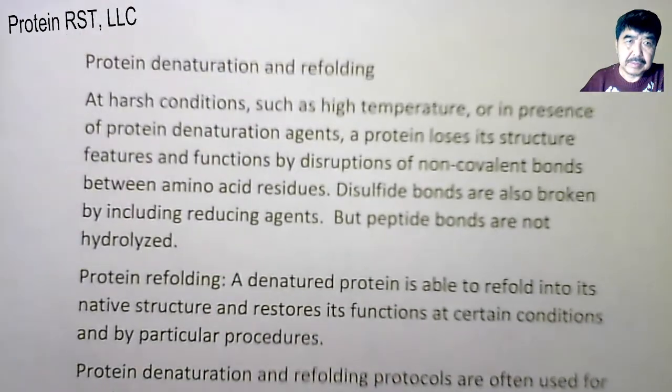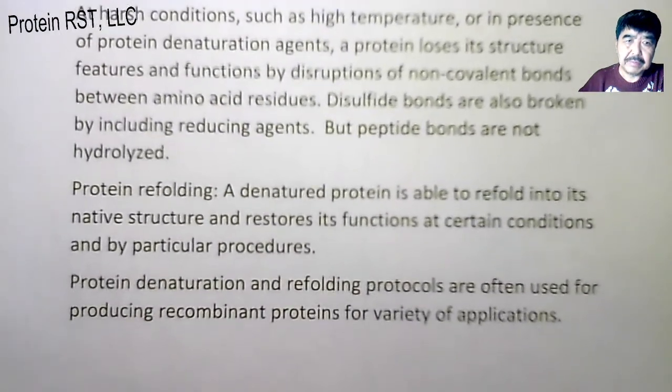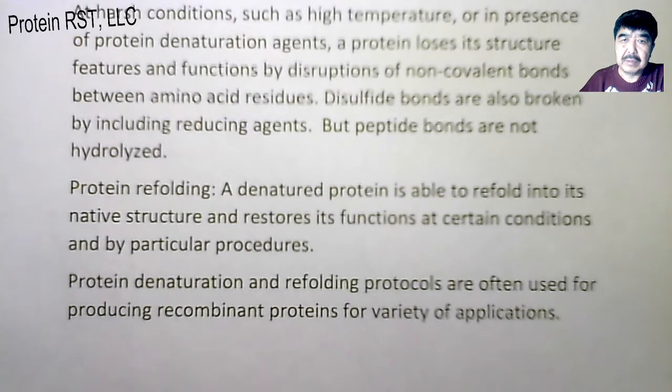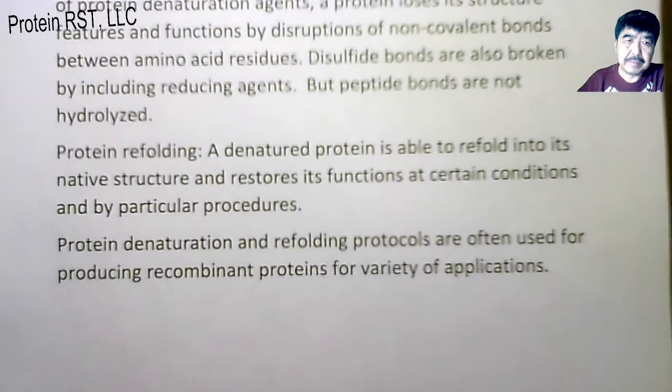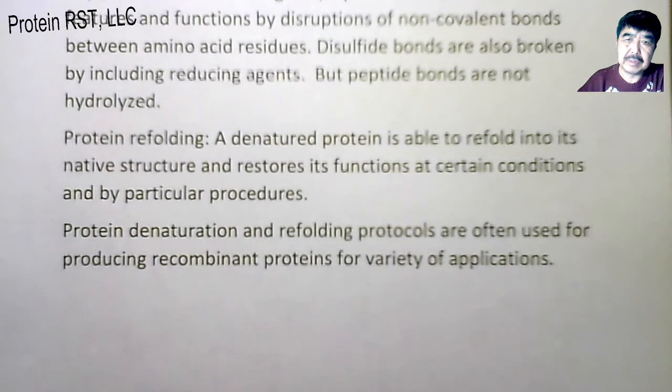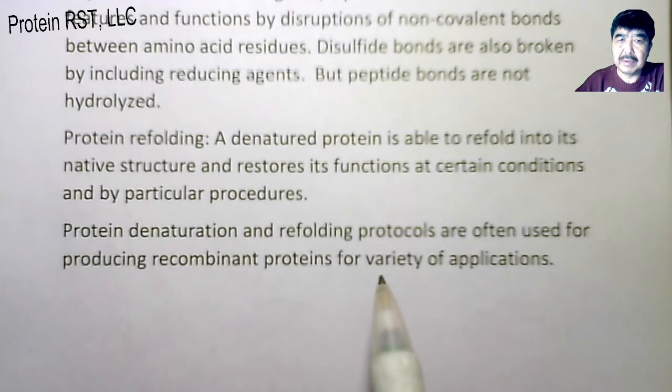Protein refolding: A denatured protein is able to refold into its native structure and restore its functions at certain conditions and by particular procedures. Protein denaturation and refolding protocols are often used for producing recombinant proteins for a variety of applications.